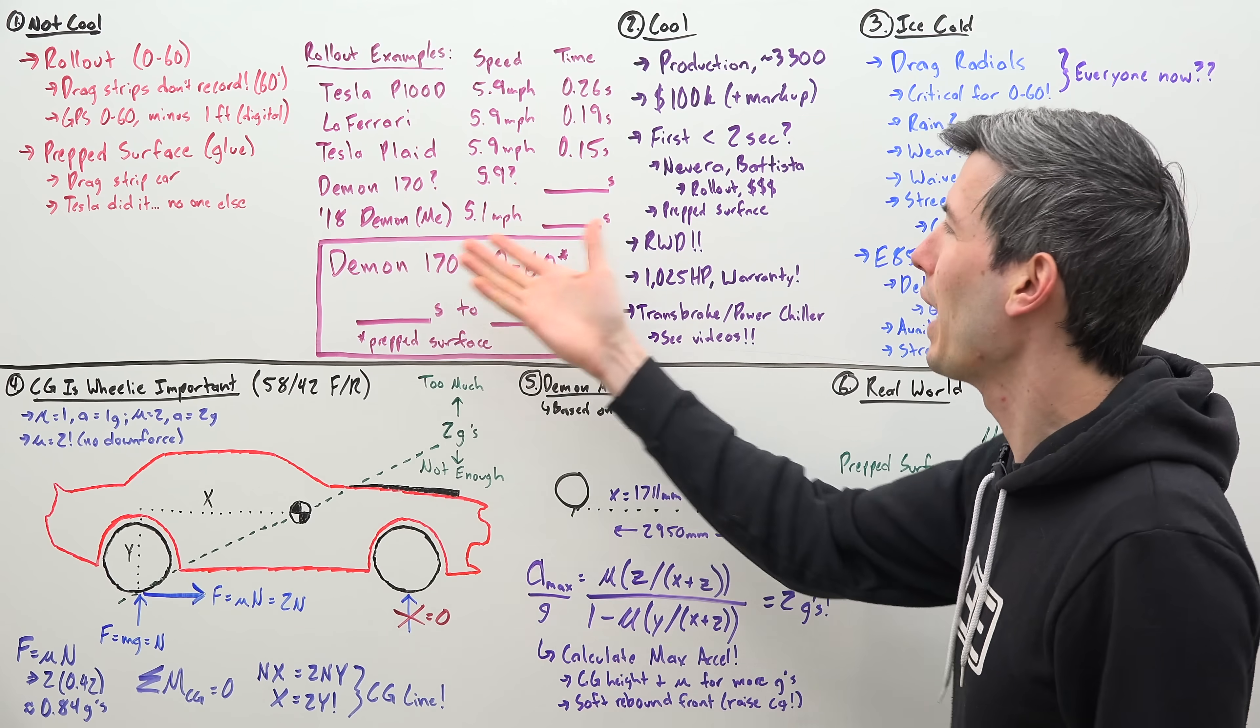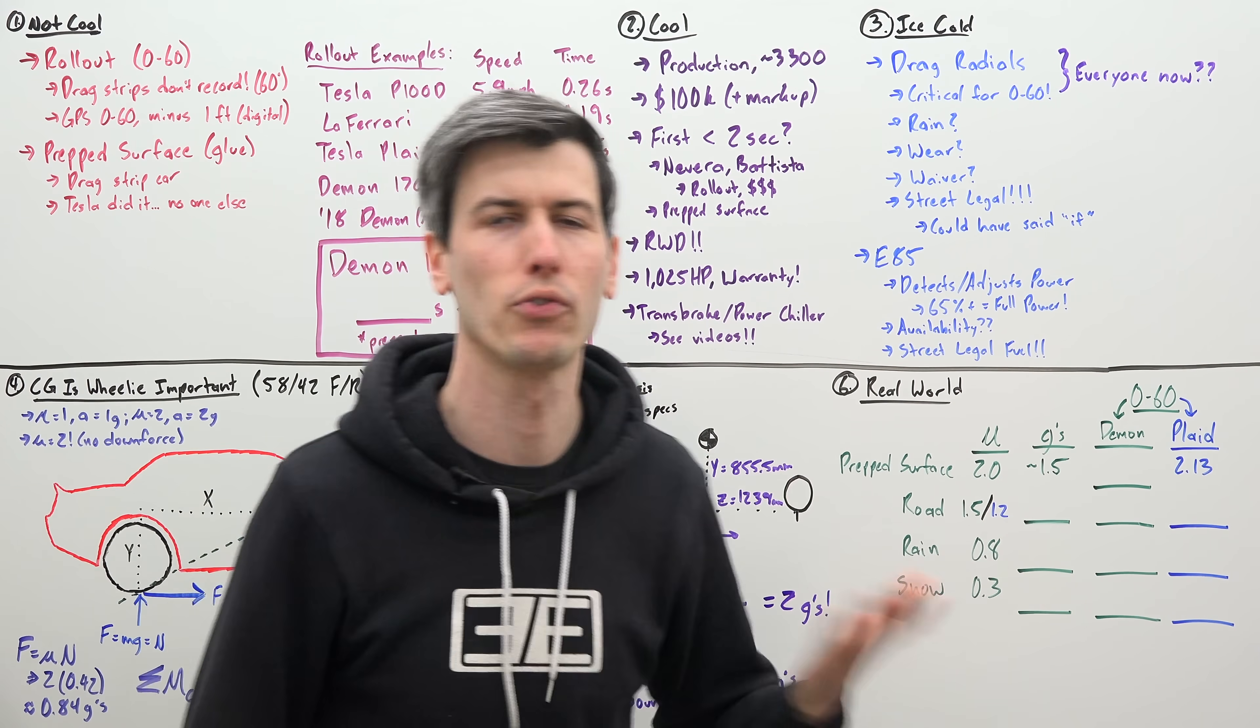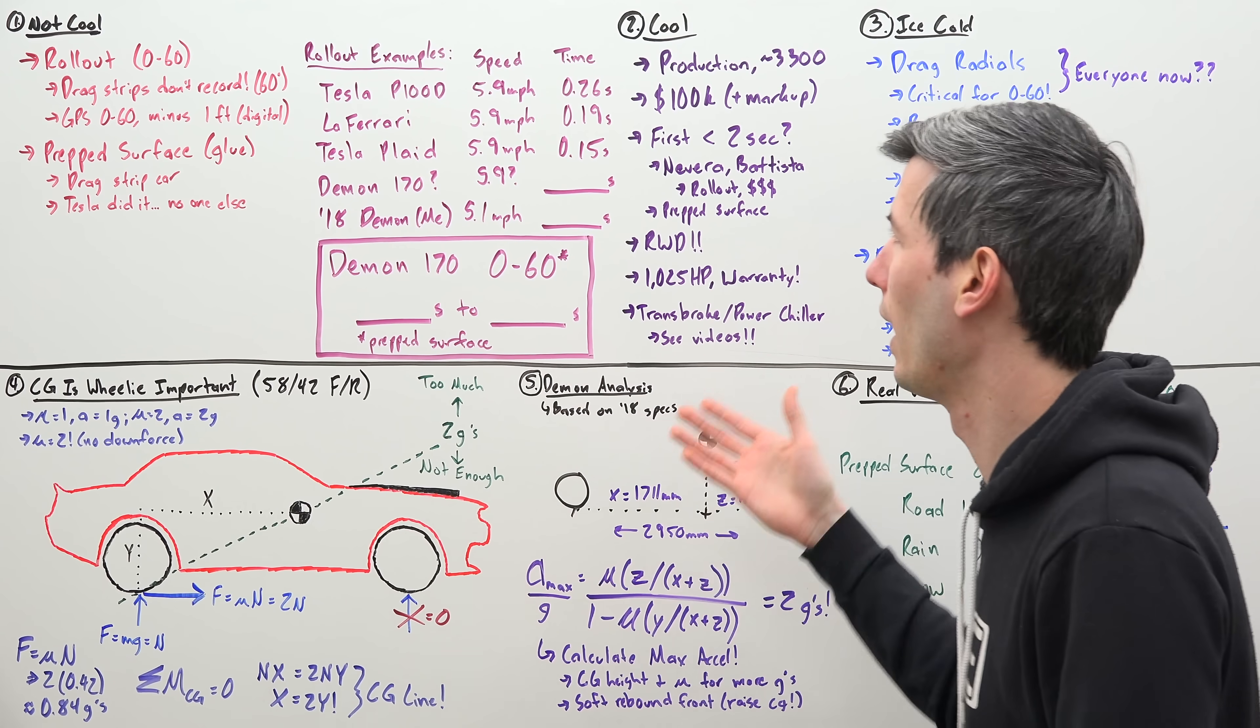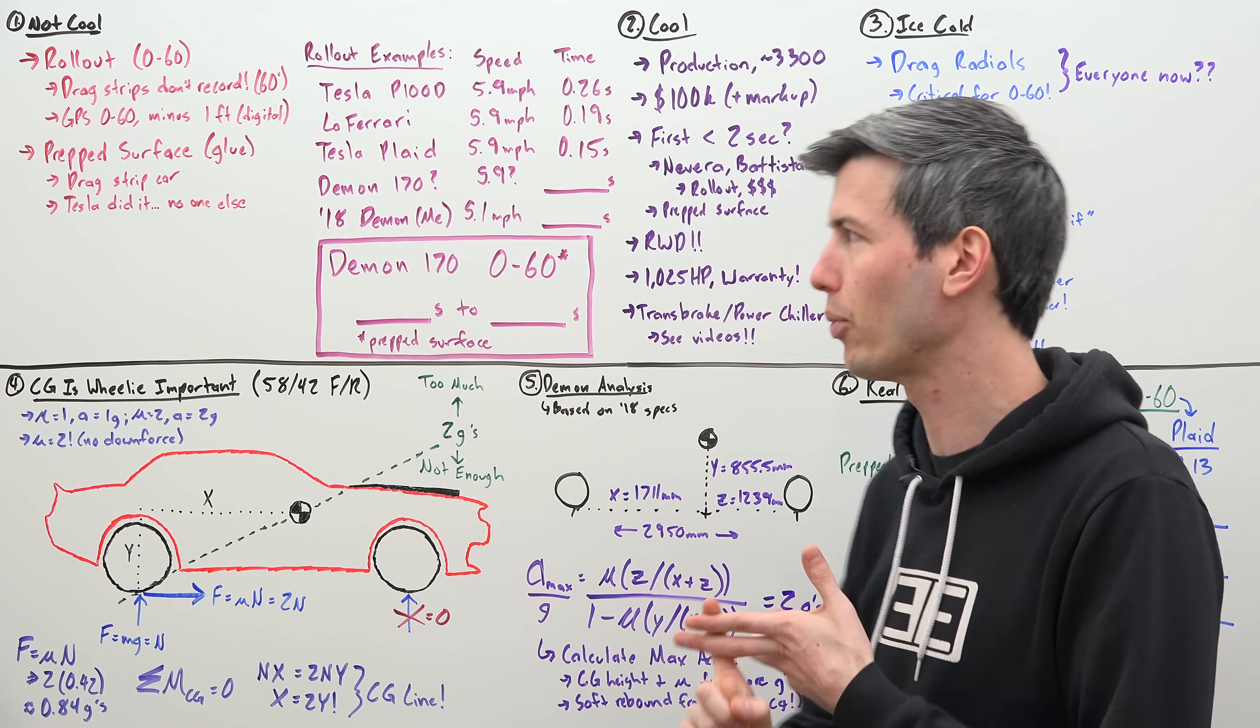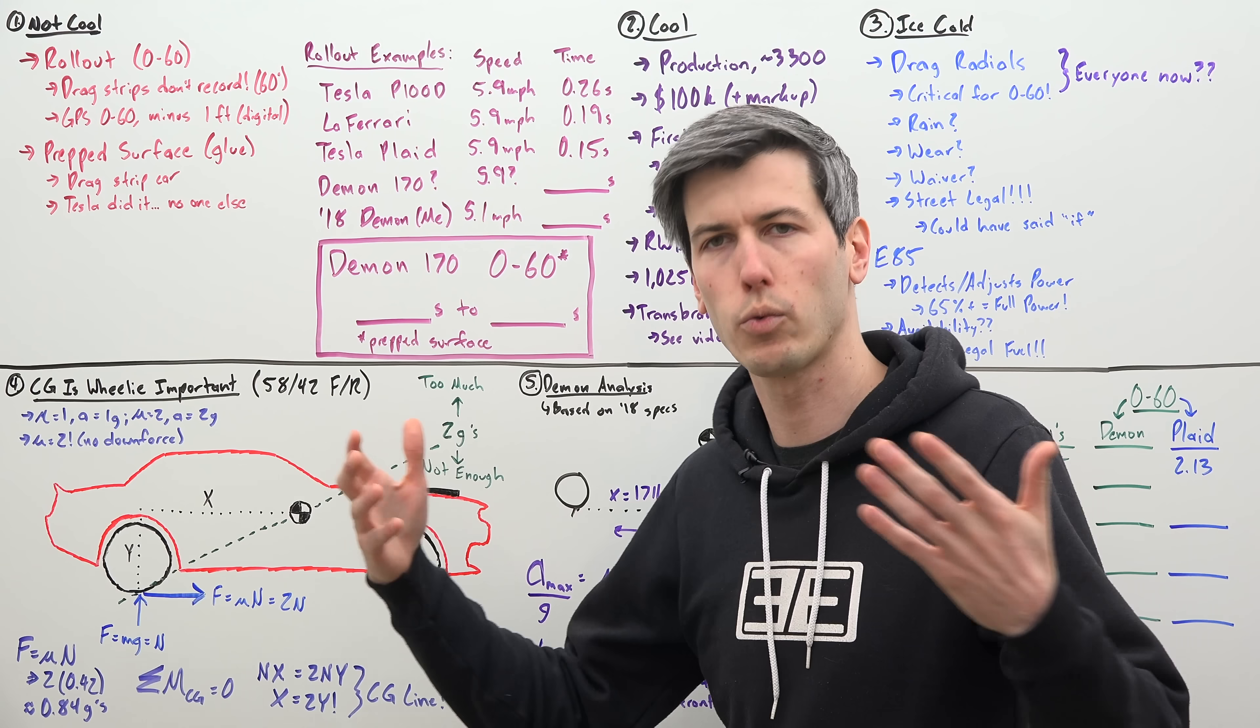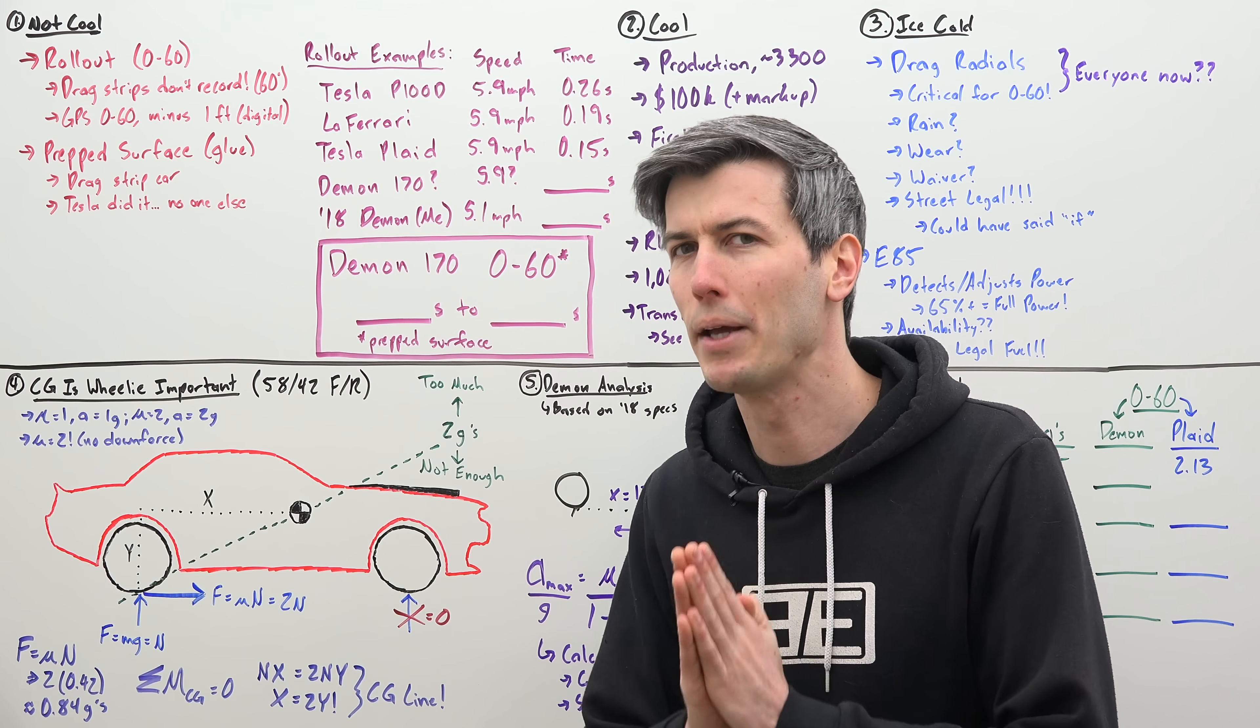Okay, but this is still a really cool achievement. So let's break down the numerous disclaimers that go along with this 0 to 60 and talk about what the real 0 to 60 might be. So here we have what is the equivalent of Top Gear's cool wall, except now we're looking at disclaimers for this car's 0 to 60. Some of those disclaimers are not cool. Some of them are very cool. And starting off with not cool, there's really two big ones, rollout and a prepped surface.